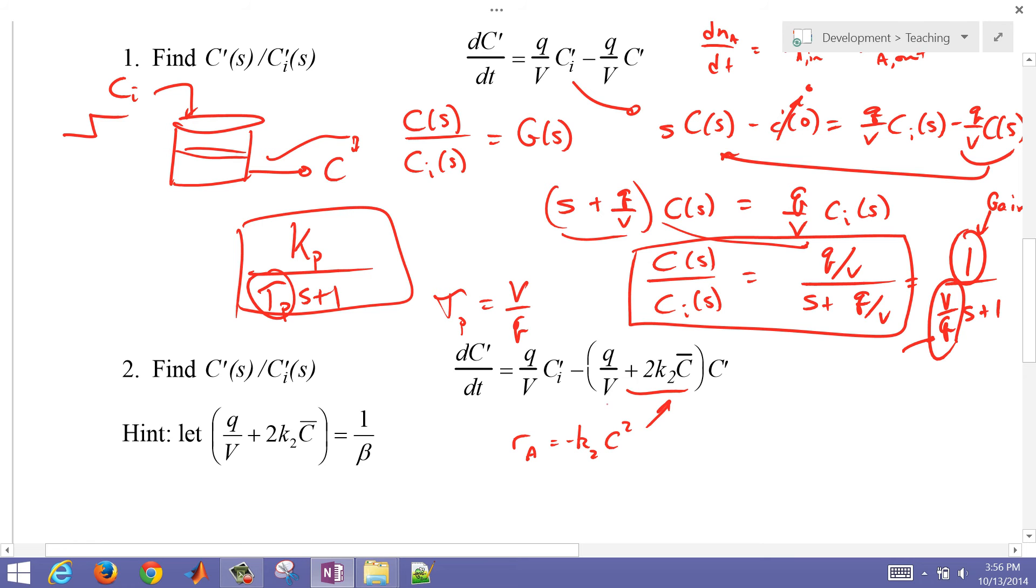it looks like we had the rate of A was K2 times C squared. And when we linearize that, we get this term, which is just going to be a constant. So I'm going to call this, just in the hint here, I'm going to call this 1 over beta.